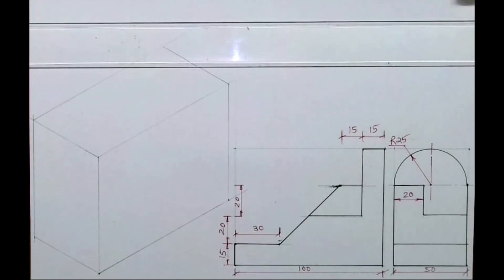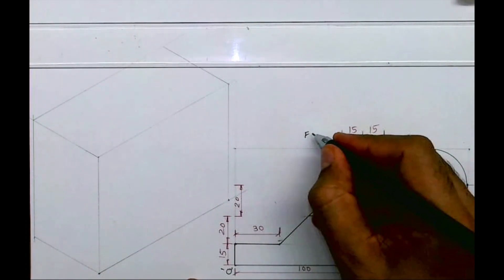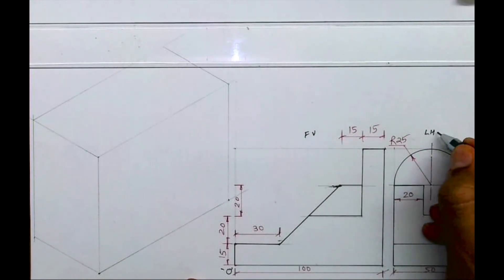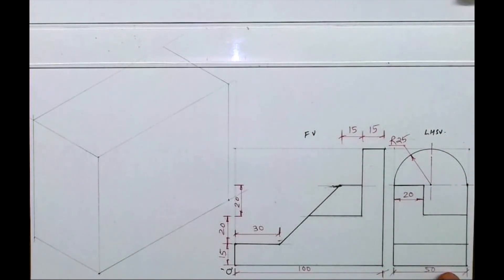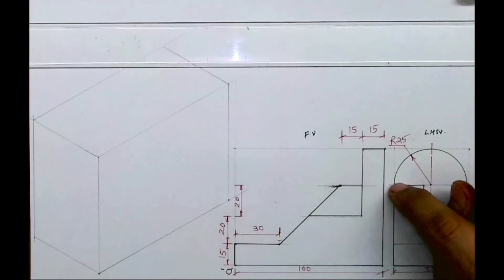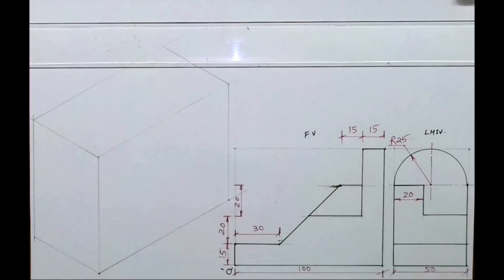Welcome to technical drawing. Today we will draw this sum in isometric. They have given you front view and left and side view. See this - this is origin, front view, left and side view. We'll see length, width, and height. Length is 100, height is 20, 20, 15, and 25, and width is 50. So first we will draw layout.